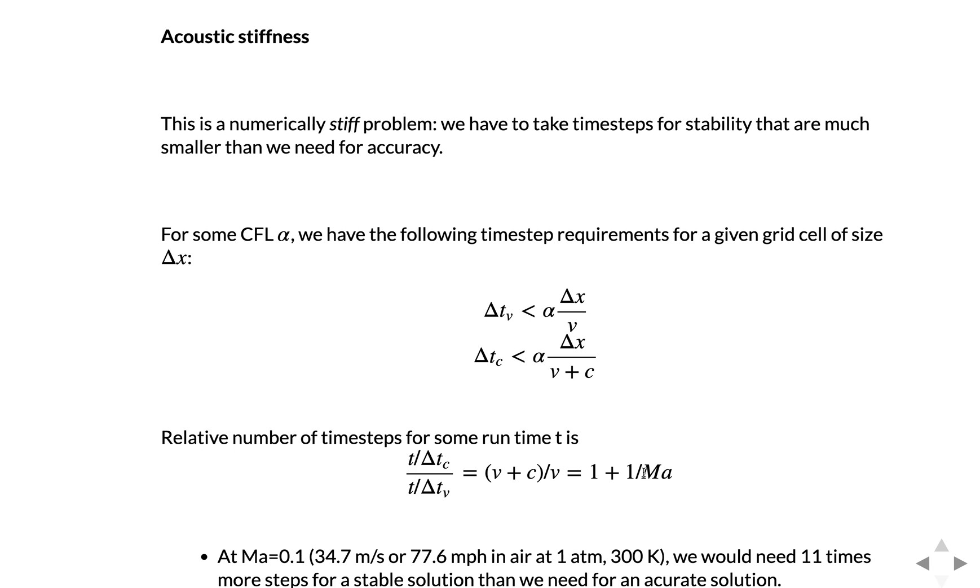So for example, at a flow with Mach 0.1, which is 34.7 meters per second, which is 77.6 miles per hour in air, we would need eleven times more time steps for a stable solution than we would need for an accurate solution. So you end up having to take, if you solve the compressible flow equations at slow speeds, you have to take an order of magnitude more time steps than you normally would to get an accurate solution. And obviously we don't want to do that. We'd like to have the solution approach be more computationally efficient than that.